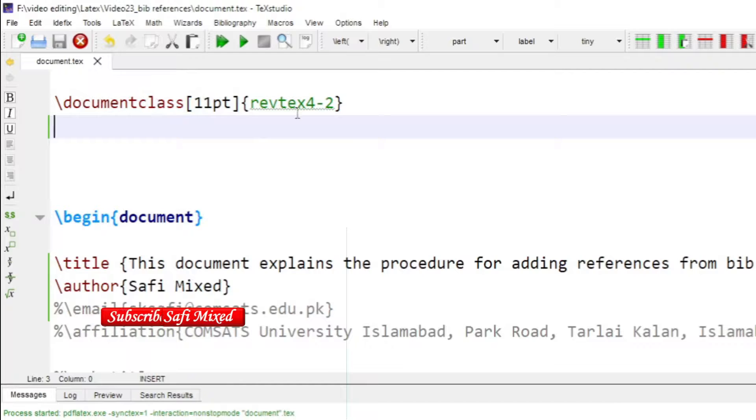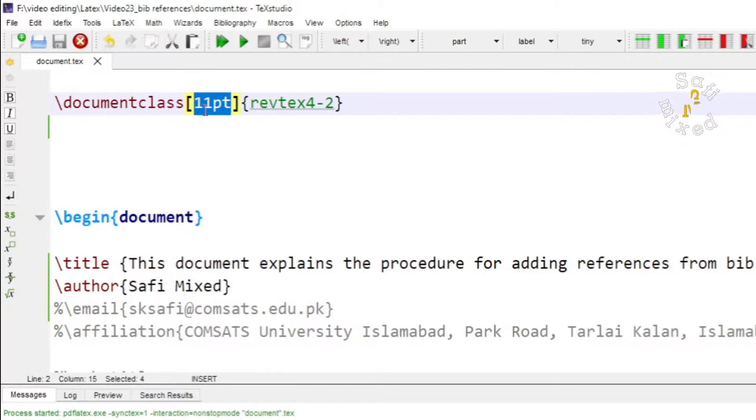You see here I'm using document class revtex4 and I have added an optional argument in which I have written 11 points which specify the size of the text and I will add other information during this video into this optional file.